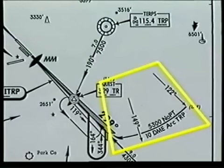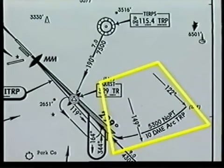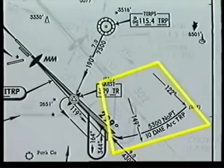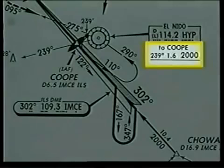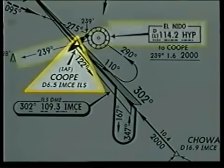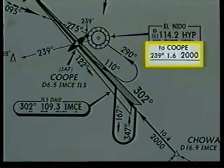The 122 degree radial marks the beginning of the DME arc. The 149 degree radial is called a lead radial. It provides you with a lead point for making your turn from the DME arc to the inbound course. Notice how the DME arc turns inbound at this point. Where space is limited, the information for a route is printed below the facility box. For example, COOP intersection is formed by the 239 degree radial of El Nido Vortac. As the note indicates, this radial is also a flyable route.